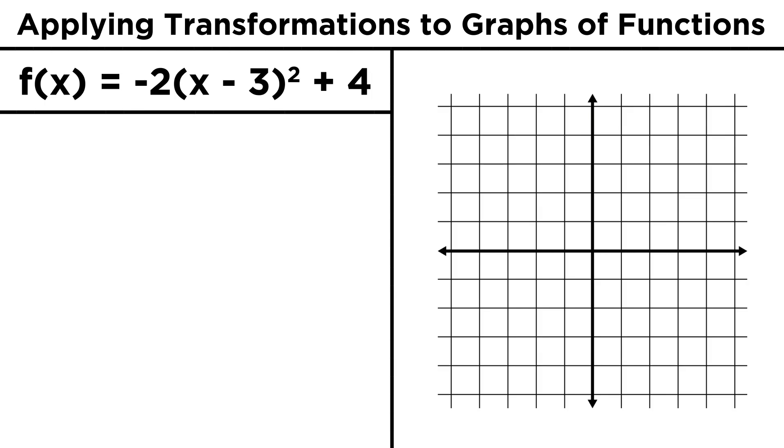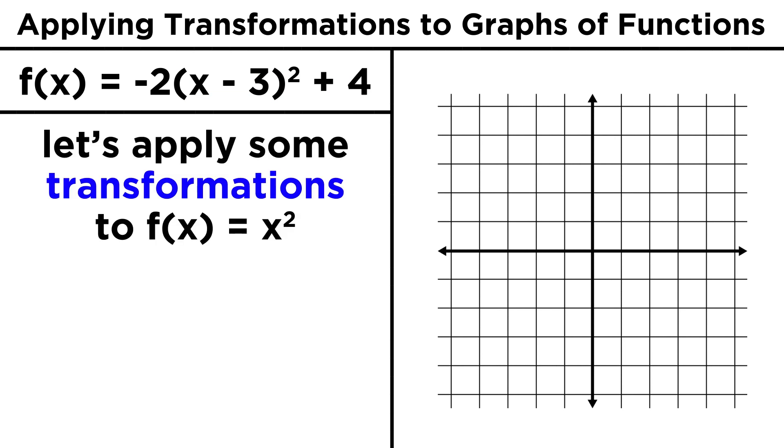Now let's look at an example that combines multiple transformations. What if we have the function negative two times x minus three quantity squared plus four? We have several transformations to apply here, but we can just do them one at a time, starting with x squared, and everything will be fine.